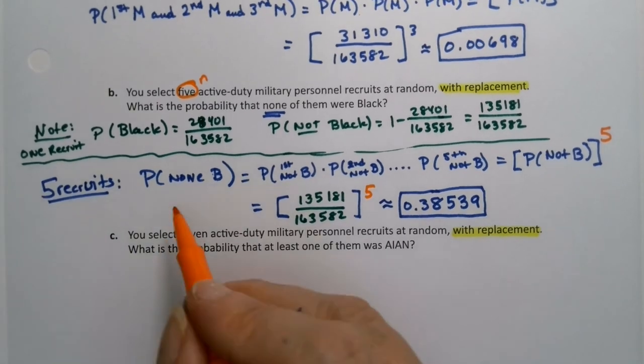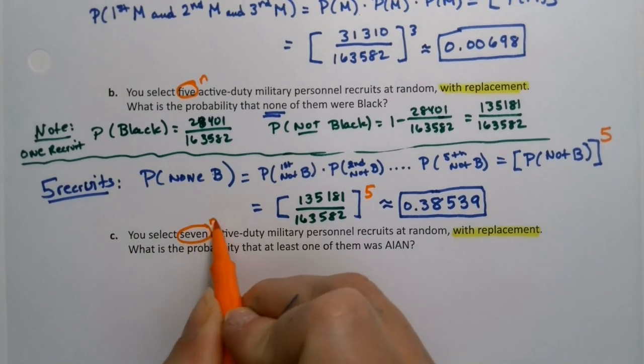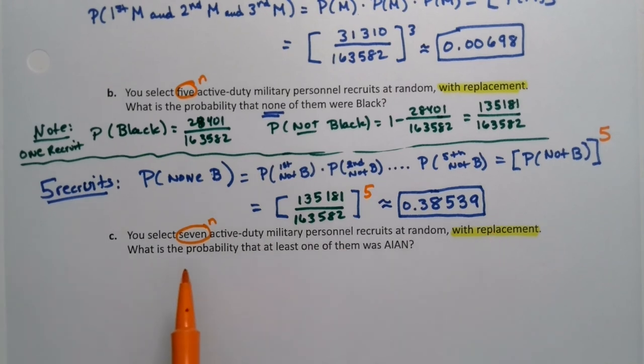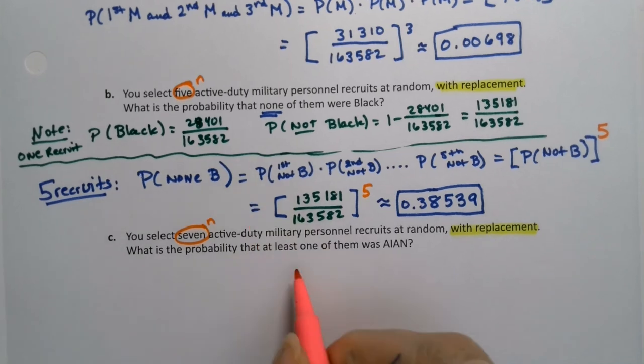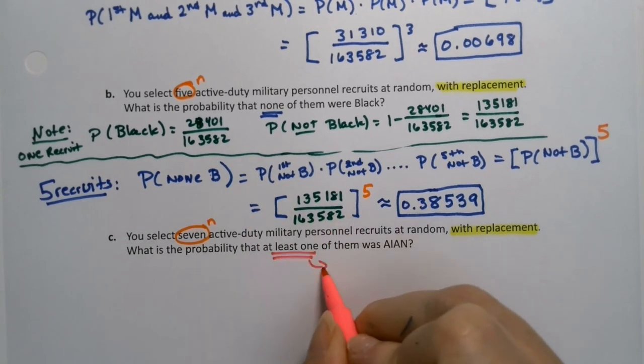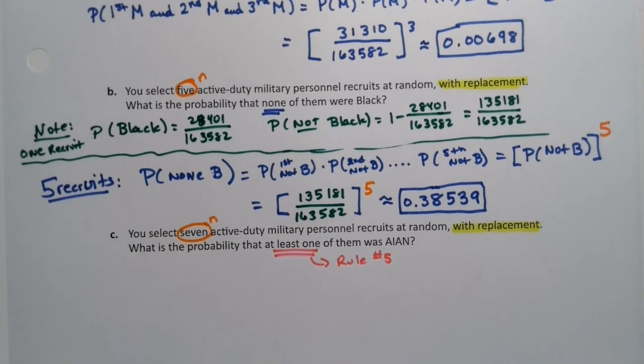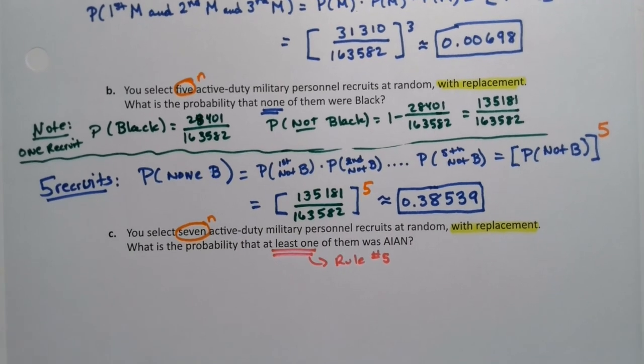Now we're going to select seven active duty military personnel with replacement, of course. What is the probability that at least one, there it is, there's that phrase. So that means we're using rule number five. It sticks out like a sore thumb.